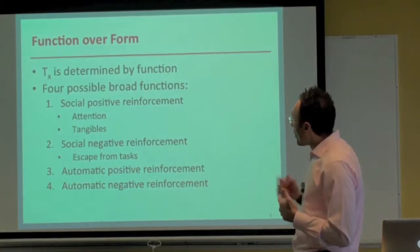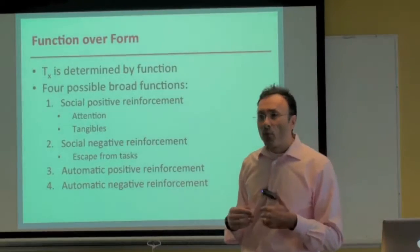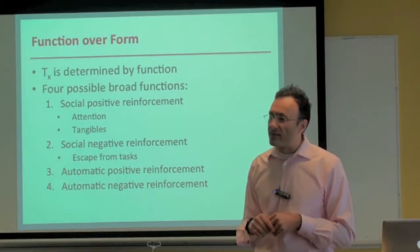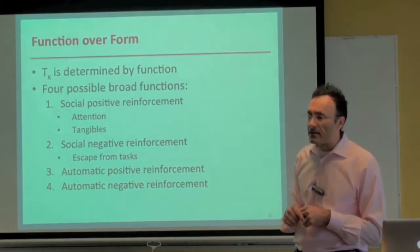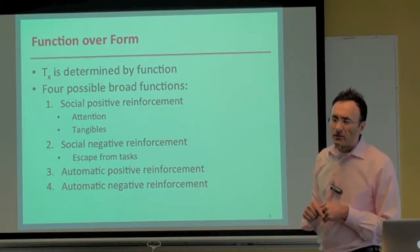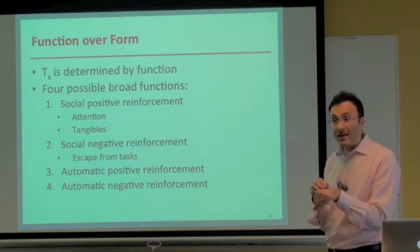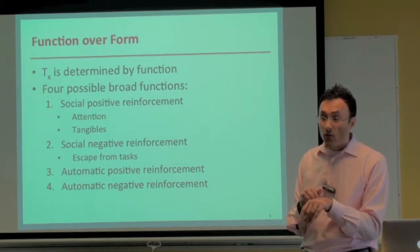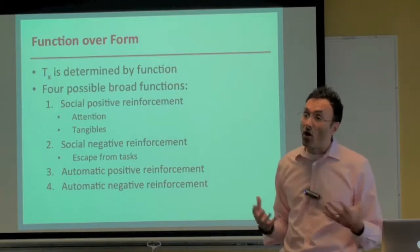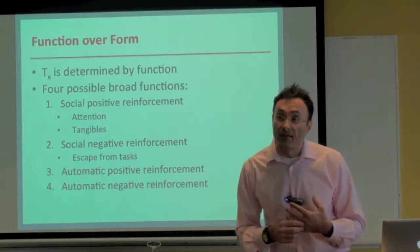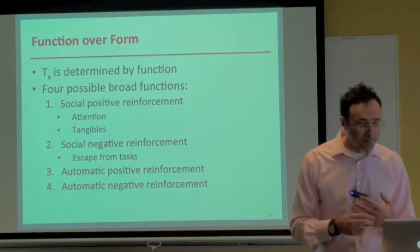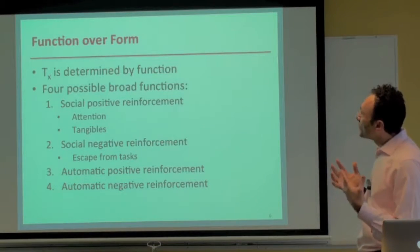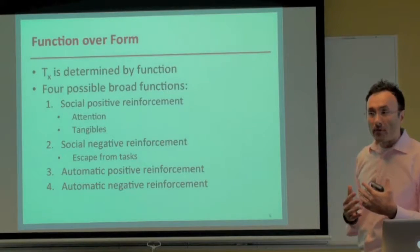With automatic negative reinforcement, the person escapes or avoids something unpleasant. Perhaps if I had an itch and I was scratching it, that would be an example of automatic negative reinforcement. So: function over form.